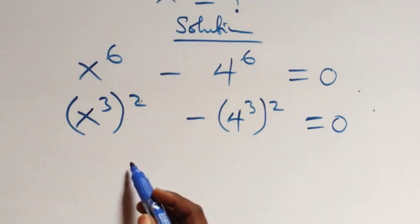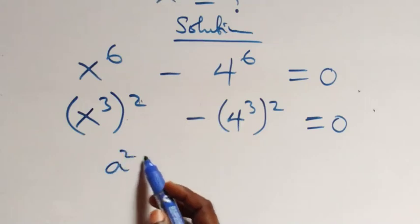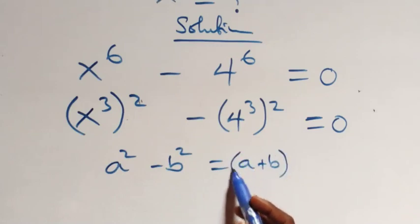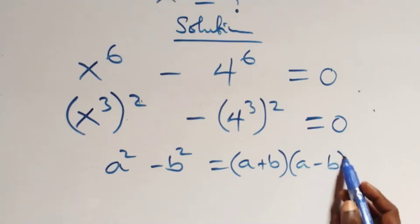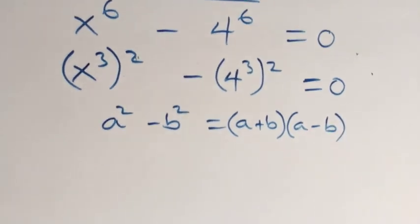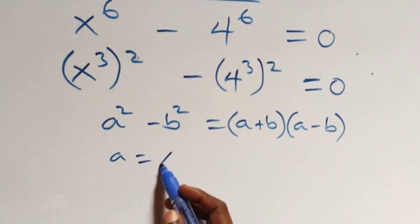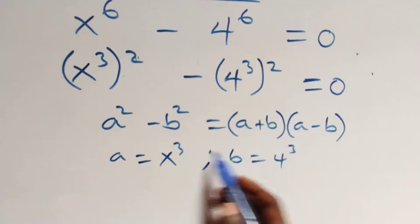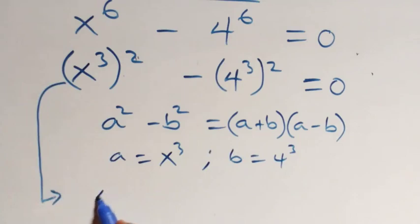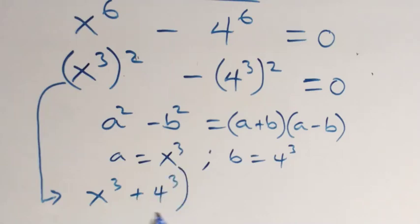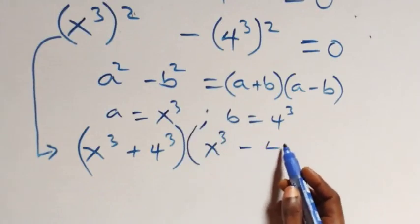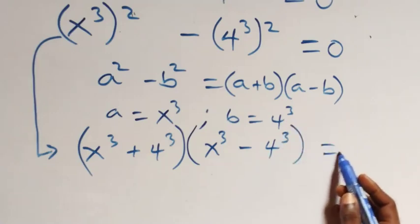This follows the difference of two squares: a squared minus b squared equals (a + b)(a - b). Here a is x raised to the power 3 and b is 4 raised to the power 3. So this becomes (x³ + 4³)(x³ - 4³) equals 0.